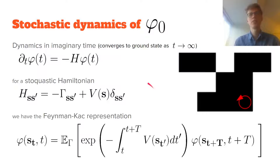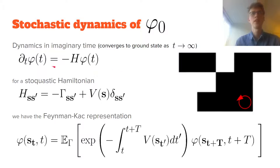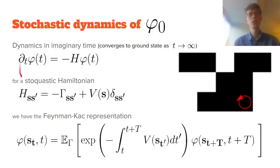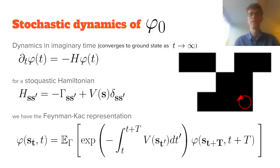These changes happen in imaginary time. The imaginary time Schrödinger equation describes a time evolution that leads to the ground state as time goes to infinity — which is why we're interested in this, since we care about zero and low temperature behavior. For stoquastic Hamiltonians, this leads to a representation called the Feynman-Kac representation.